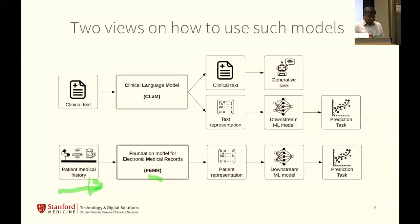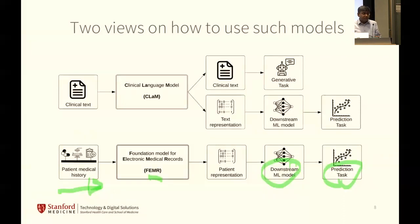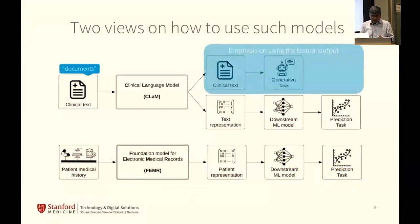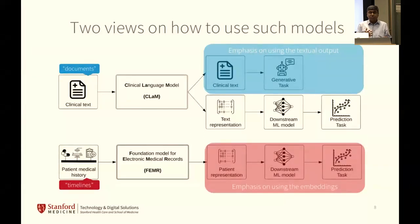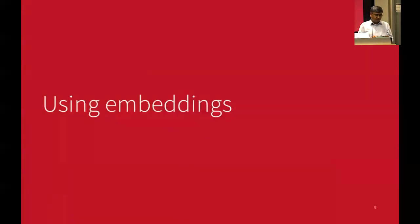These things allow us to have downstream classifiers and prediction tasks that have learned the language of the EHR. We still call them language models — trained in a very similar fashion using the transformer architecture — but they have very little to do with words as in English, Spanish, or Swahili. So when talking about textual output, the emphasis is on documents: we input prose and get prose back. When talking about using embeddings, the emphasis should be on timelines, because everything in medicine happens over time. Let's double-click on the embeddings.